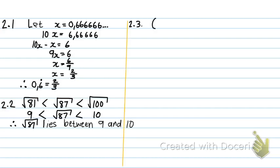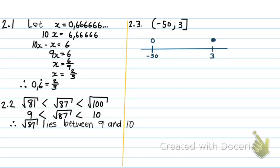Number 2.3: represent negative 50 to 3, negative 50 excluded and 3 included, on a number line. That's interval notation, so they are using real numbers. With real numbers I can just draw a line — I don't need to write each number between negative 50 and 3. I make an open dot by negative 50 and a closed dot by 3, and draw a line between them.